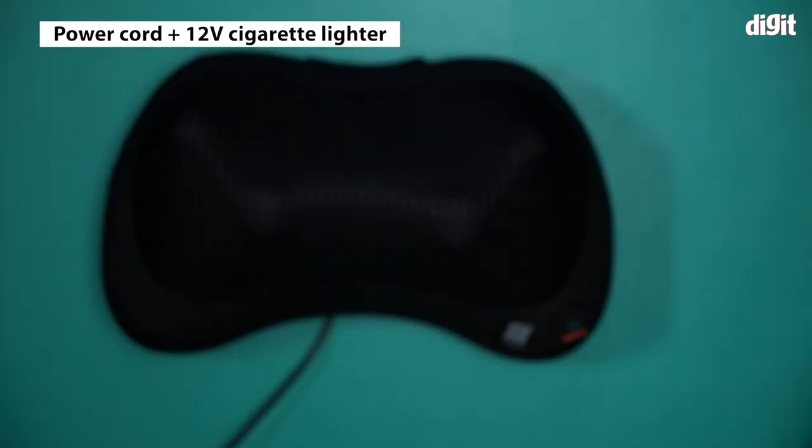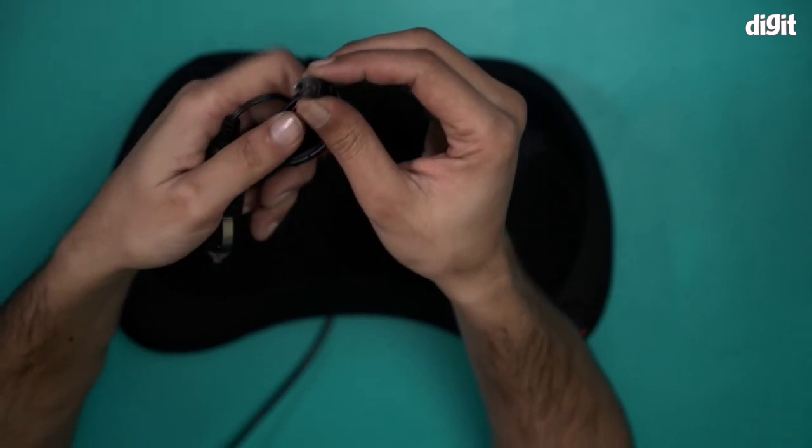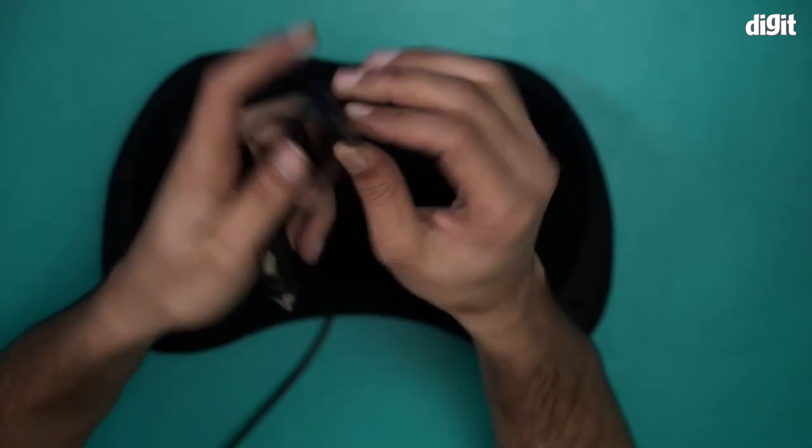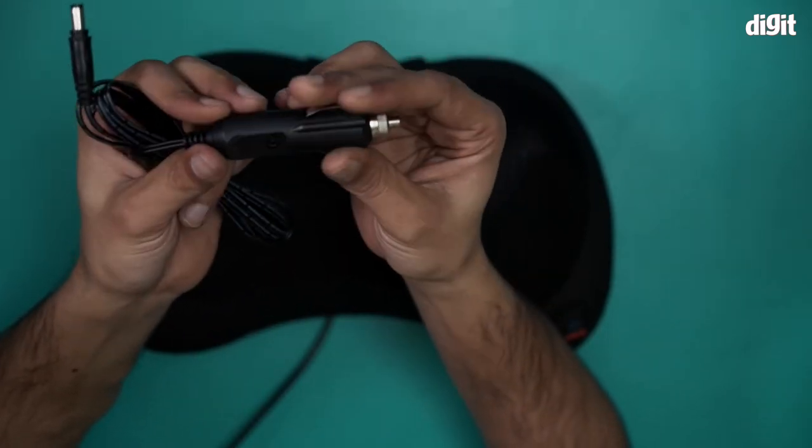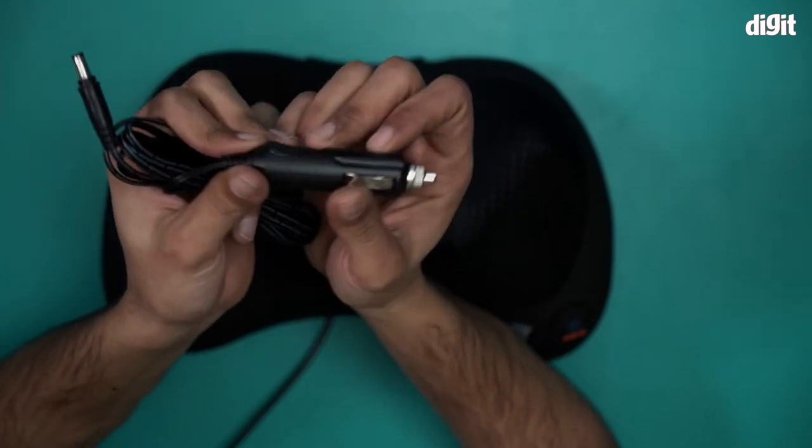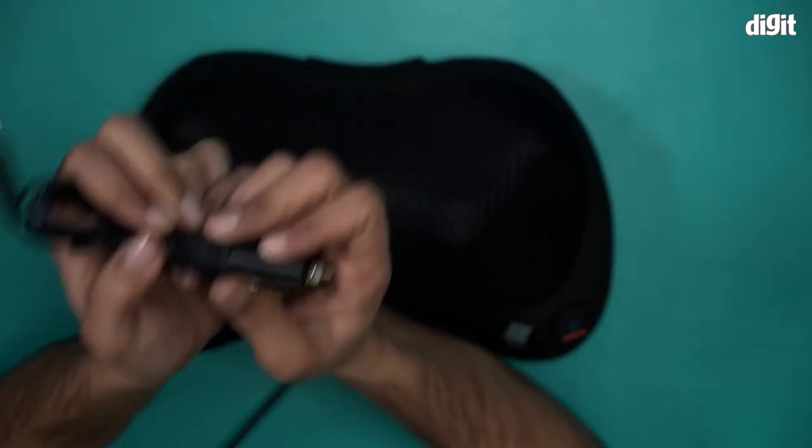There's also a power cable for your car. This is the same thing. This part will go inside the massage pillow, but this is a 12 volt cigarette lighter, which is basically what you plug to your car.